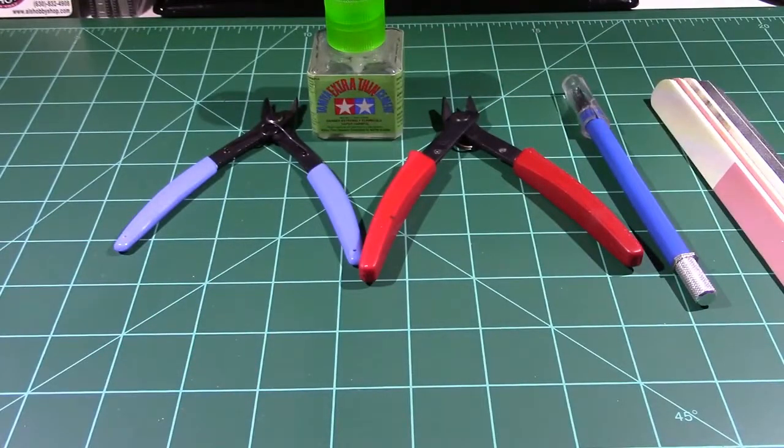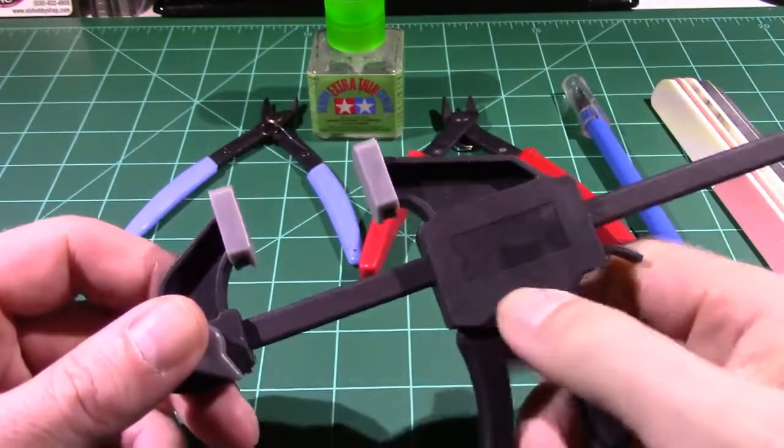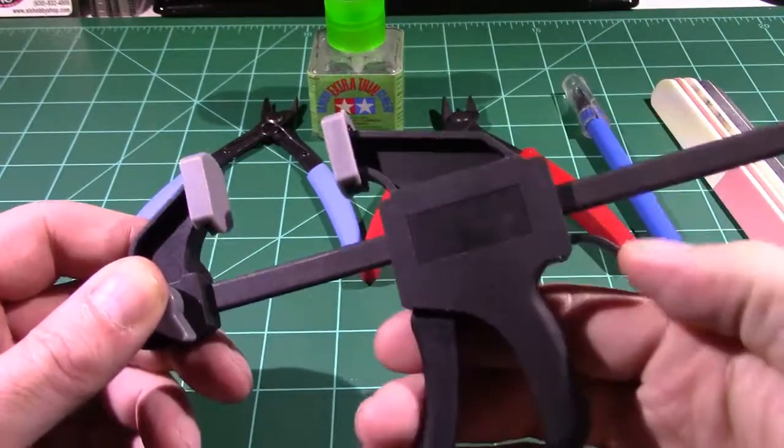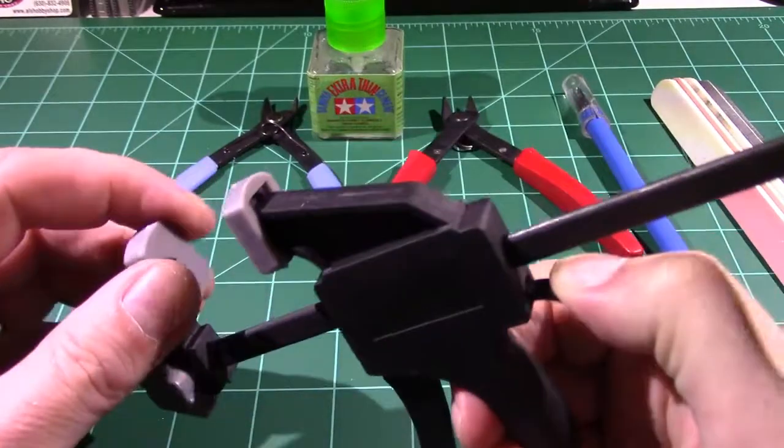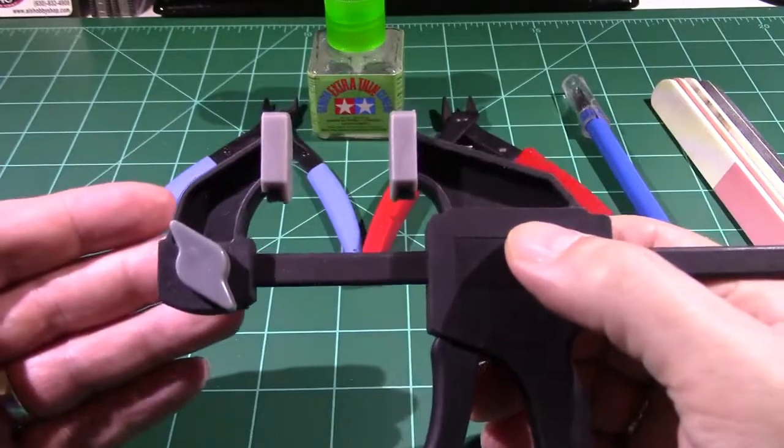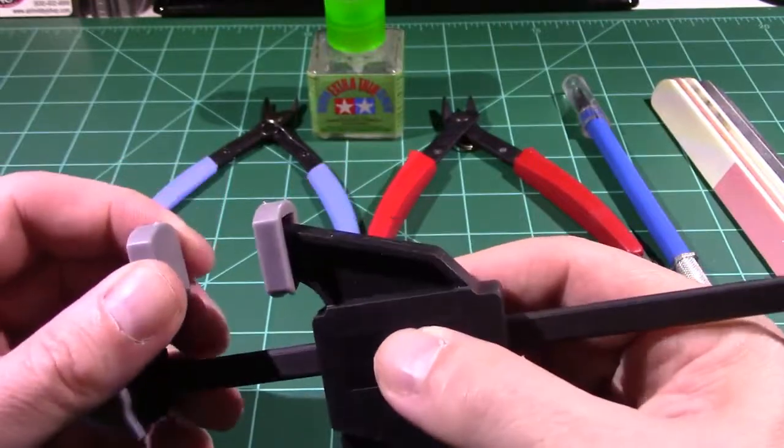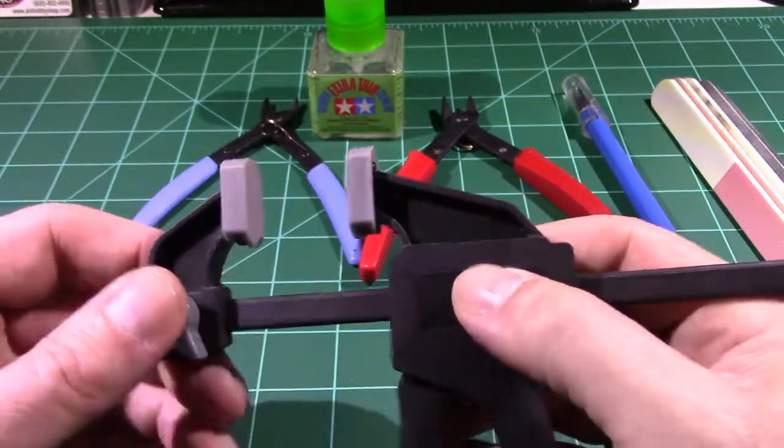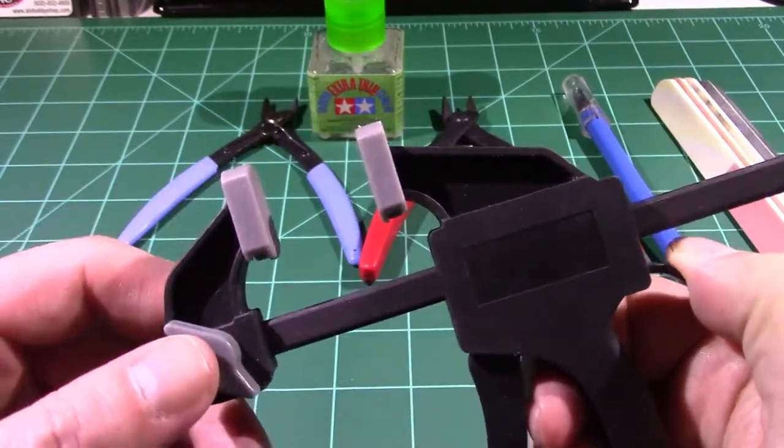Once you begin gluing the pieces together, you're going to have to have a way of clamping them. For larger pieces, I picked these up at Harbor Freight and I'll put a link down below in the description box. Harbor Freight, for those of you who don't know, or maybe don't live in the U.S., it's a kind of a discount tool house. They run a catalog as well so you can probably order. They may even ship internationally.